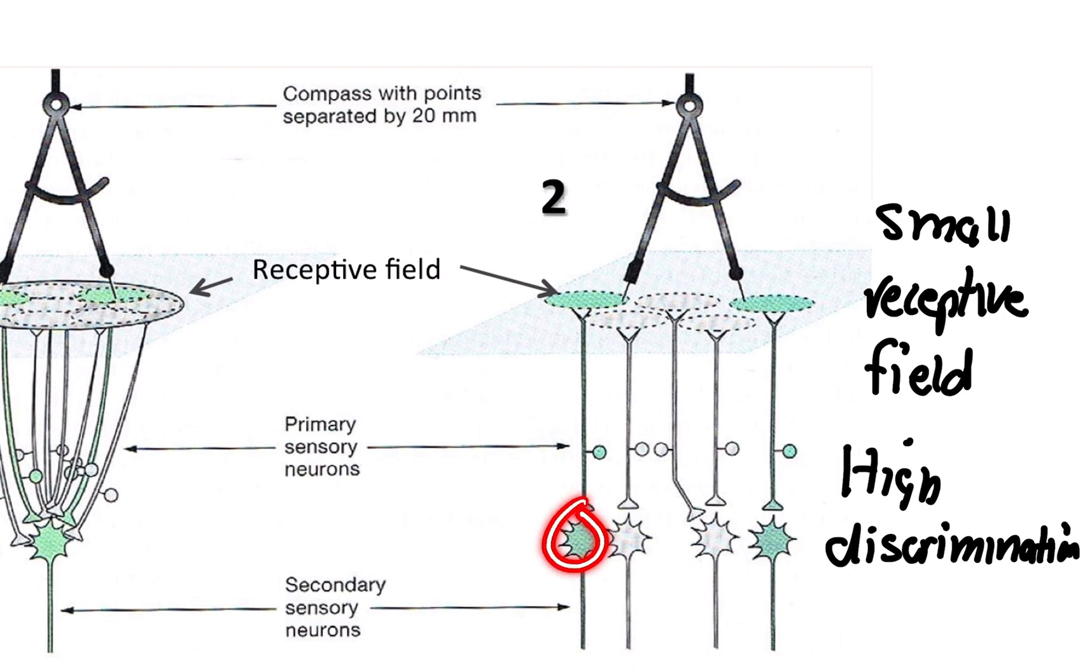The reason is because this one neuron is only concerned about the small space, a small receptive field. This neuron is recepting in a small field. This neuron right here is not hearing from this one or this one or this one or this one. It's only worried about the small little space. It's high discrimination because we have two neurons in close proximity and we're able to tell that there's two needles. So this neuron is going to the brain and this neuron is going to the brain, telling us there are two signals or two needles touching our skin.